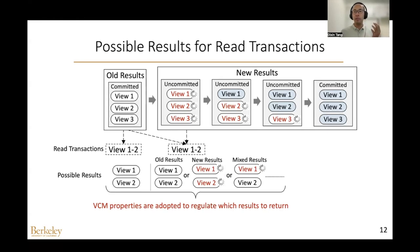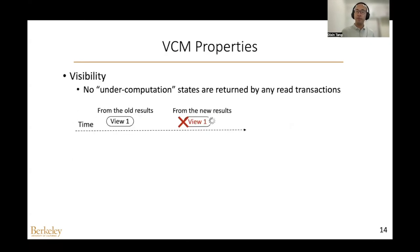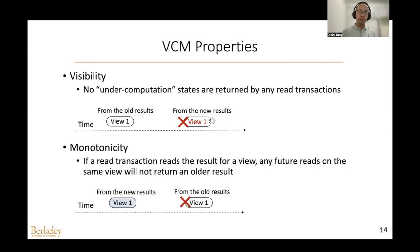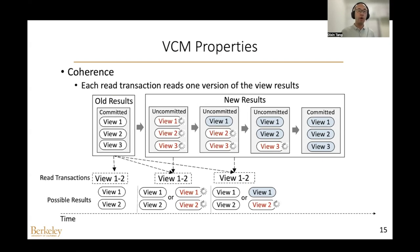There are many possible results that could be returned by the read transactions — some old, some new, or even mixed. Therefore, VCM properties are adopted to regulate which results to return. For visibility, it guarantees no under-computation states are returned. For monotonicity, any future reads on the same view will not return an older result. For coherence, each read transaction must read one version of the view results — for example, only the old or only the new results, but not a mix.